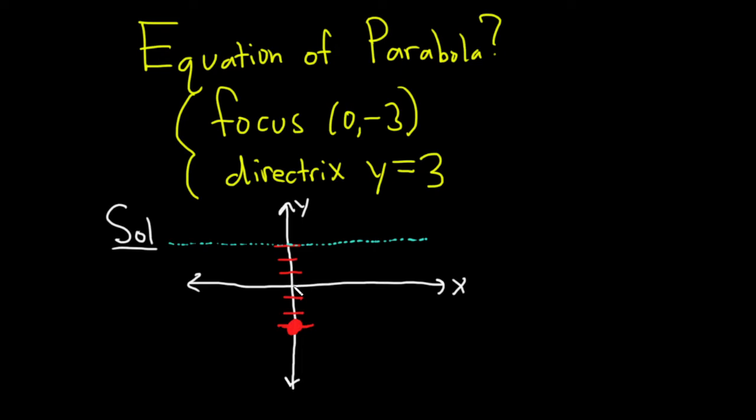And so that would put it right here in the middle, right here at the origin, because this distance here is three and this distance here is three. So this point here would be equidistant from both the directrix up here and the focus down here. So this is the vertex.